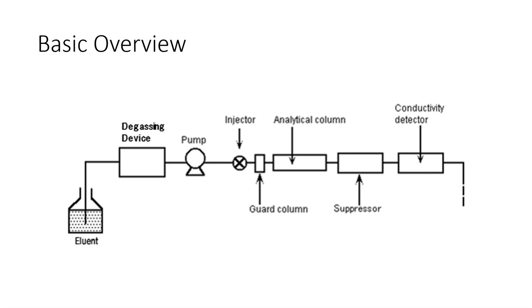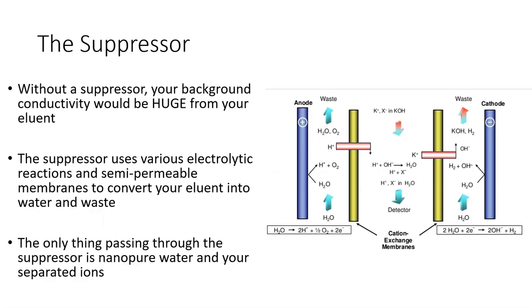But there's one more very important component before we get there. This is the suppressor. So without a suppressor, your background conductivity would be huge from your eluent. We're using acid and base concentrations in our eluent and that has a lot of conductivity, so we need to suppress that first. The suppressor uses various electrolytic reactions and semi-permeable membranes to convert your eluent into water and waste.